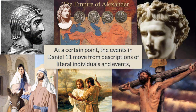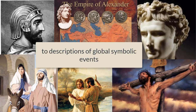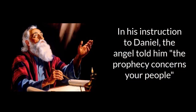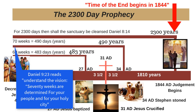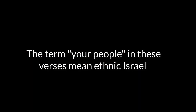At a certain point, the events in Daniel 11 moved from descriptions of literal individuals and events to descriptions of global symbolic events. In his instruction to Daniel, the angel told him, the prophecy concerns your people. Daniel 10:14 reads, Now I have come to make you understand what will happen to your people in the latter days, for the vision refers to many days yet to come. Daniel 9:23 reads, Understand the vision. Seventy weeks are determined for your people and for your holy city.